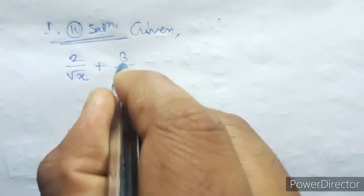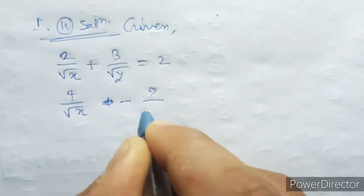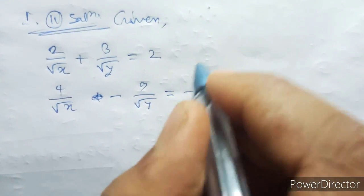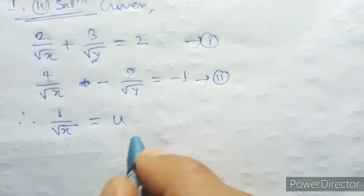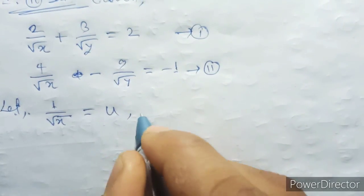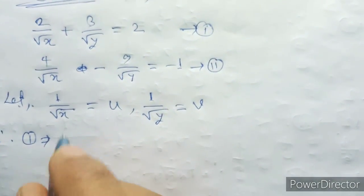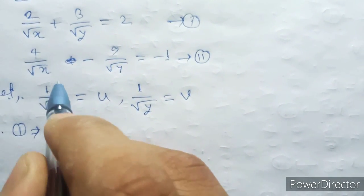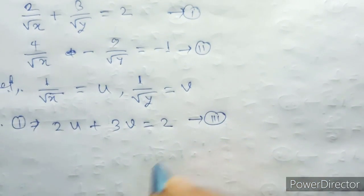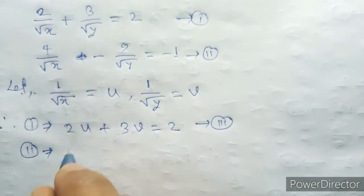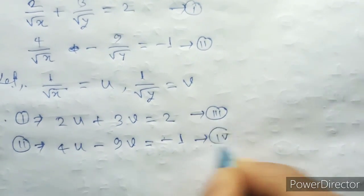Now problem number 2: 4 by root of X plus 3 by root of Y equal to 2, and 4 by root of X minus 9 by root of Y equal to minus 1. These are equation number 1 and equation number 2. Let 1 by root of X equal to U and 1 by root of Y equal to V. So equation 1 becomes 4 into U, that's 4U, plus 3V equal to 2, equation number 3. Similarly, equation 2 implies 4U minus 9V equal to minus 1, equation number 4.